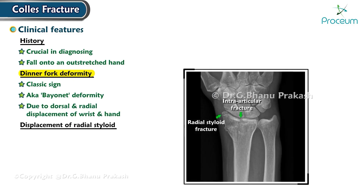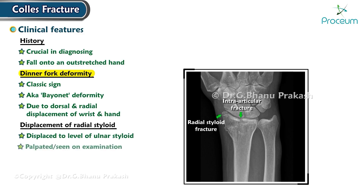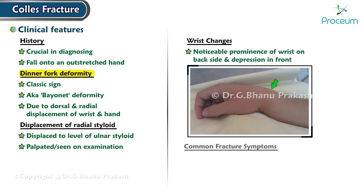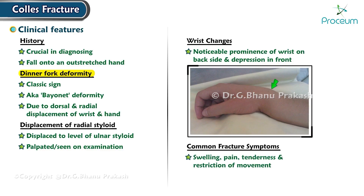In a Collis fracture, the radial styloid is displaced to the level of the ulnar styloid, which can often be palpated or seen on examination. There is noticeable prominence of the wrist on the backside and a depression in the front. As with any fracture, swelling, pain, tenderness, and restriction of movement are also present.